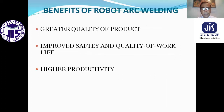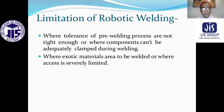Robots provide effective solutions to many welding tasks. Robots have flexibility — they differ from fixed automation which is dedicated to only one task. Benefits of robots are: greater quality of work life, higher productivity, and consistent accuracy. Safety is very important: higher productivity is achieved since continuous work is possible. Limitations of robotic welding include: where tolerances of the welding process are not tight enough, where components cannot be adequately clamped during welding, where exotic materials are to be welded, or where access is severely limited.